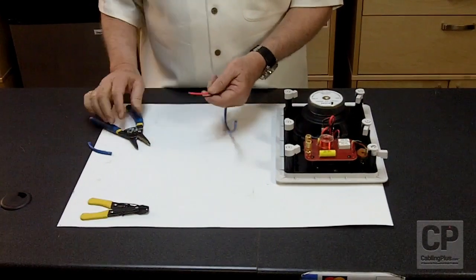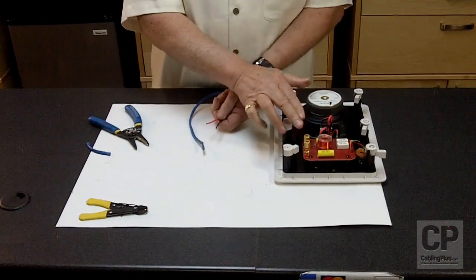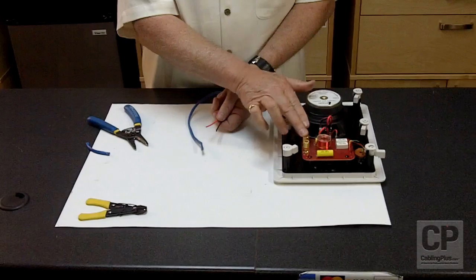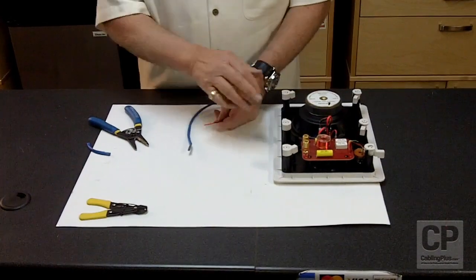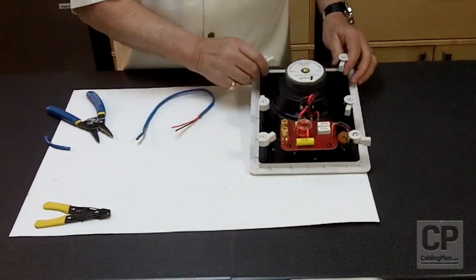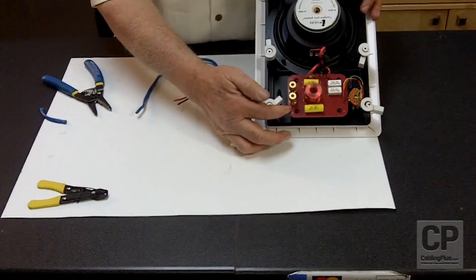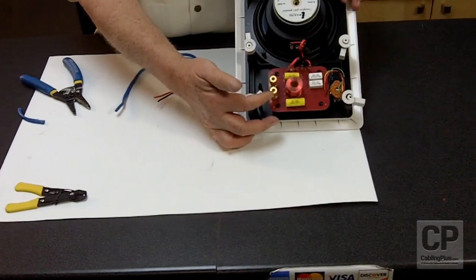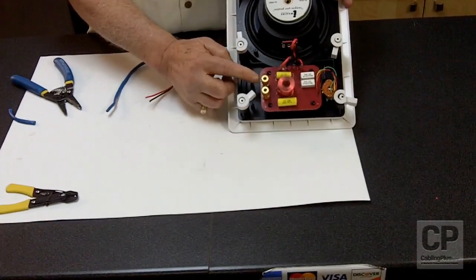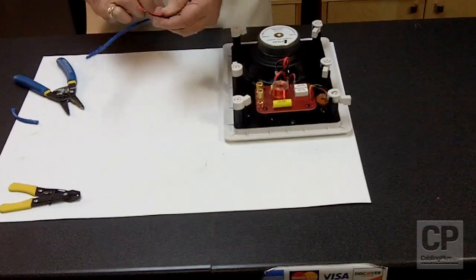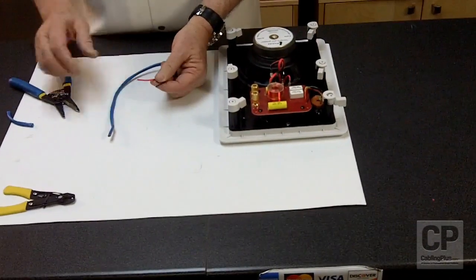Now the next thing I want to do since I'm going to be installing it on these particular terminal connections on the speaker, you'll notice we have a plus for positive and that's the red and then we have a black over here for negative and you can see the conductors of the cable I'm using have both the black and the red.